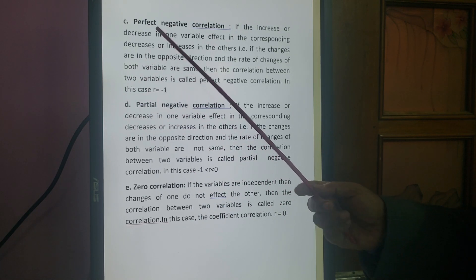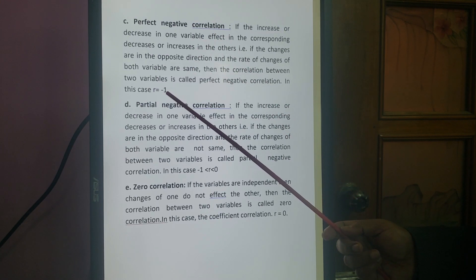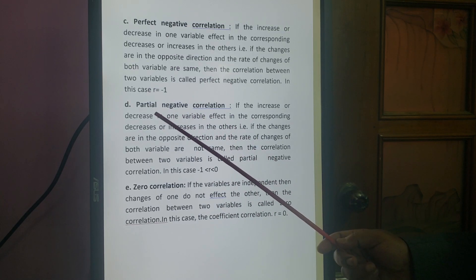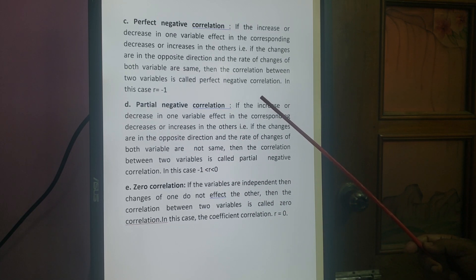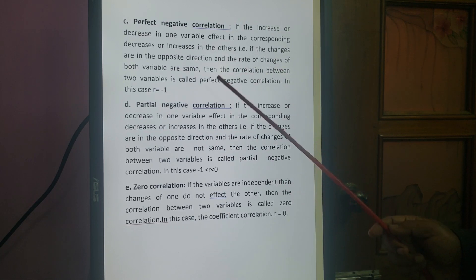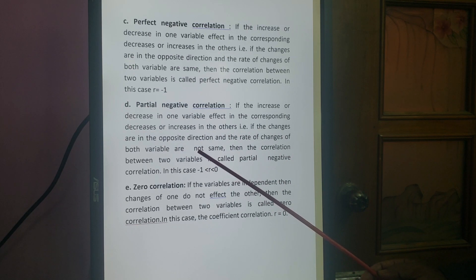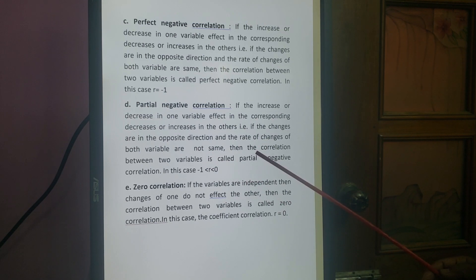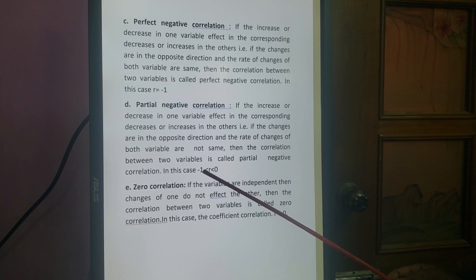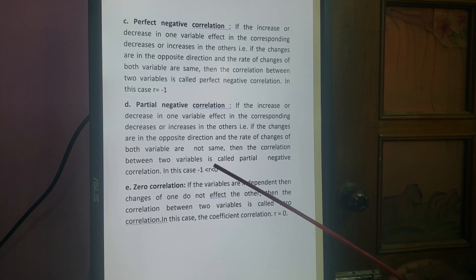Partial negative correlation: if one variable increases, the other decreases; if one decreases, the other increases — the changes are in opposite directions — but the rate of change of both variables are not the same. Then this is called partial negative correlation. In this case, R is greater than −1 and less than 0, that is, R lies between −1 and 0.